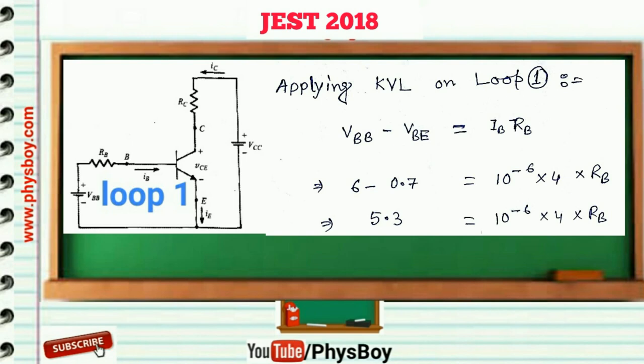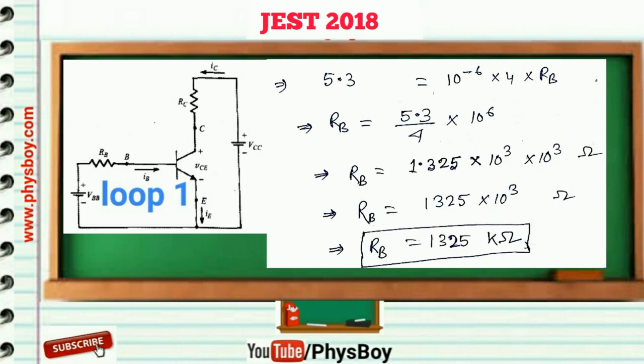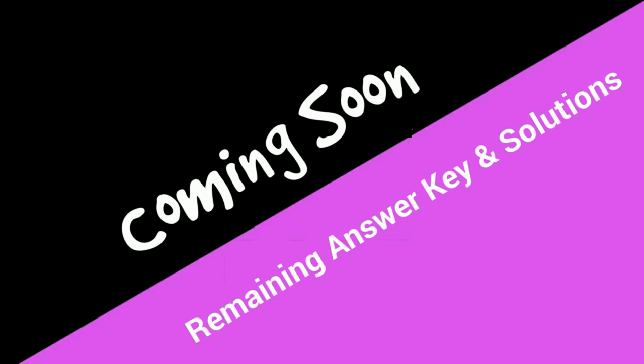By solving this equation you will get 1325 kilo-ohm. So the correct answer is 1325. As I said in the beginning of this video, you will also get remaining solutions on my YouTube channel.